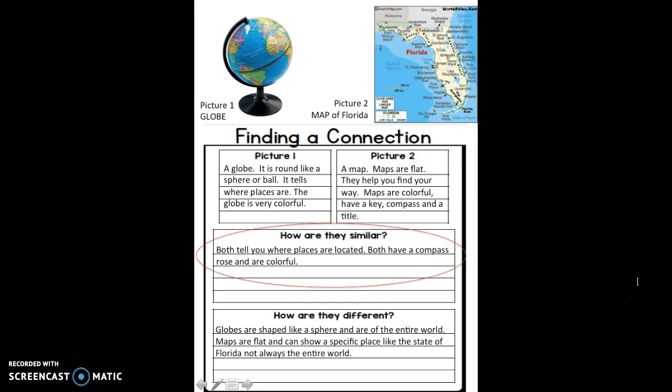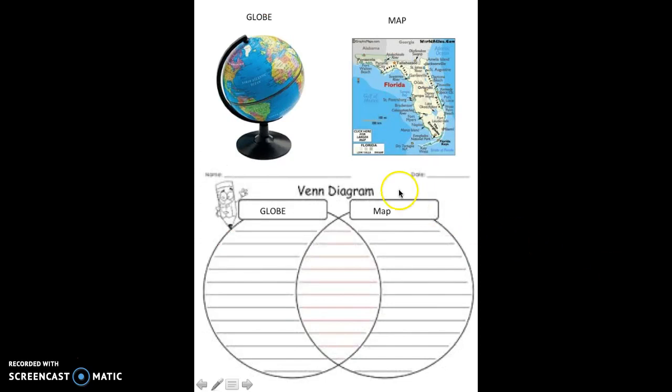When you want to find the connection, you're thinking, how are they similar? I'm going to show you a really cool tool that you're going to use a lot in first grade to help you do this. This tool is called a Venn diagram.